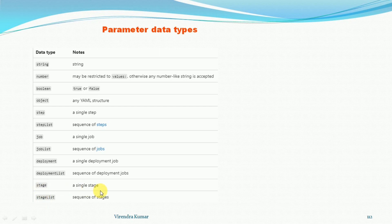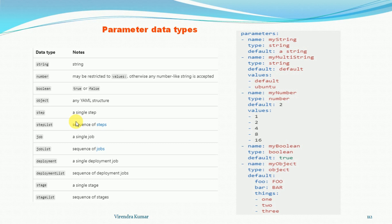You can select the stages and jobs at runtime — on which stage and job you want to run. These data types start in small letters. These are the parameter data types. For example: hyphen name my string, type is string; multi string type is string; values default is ubuntu. Hyphen name my number — you can provide values like that. Boolean value name — all the values will come under the values section. Default is set, and values are like 1, 2, 3. These are the parameter data types.